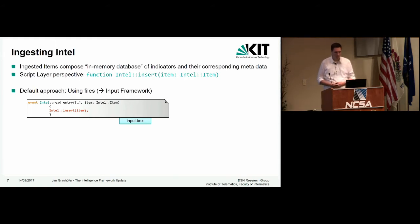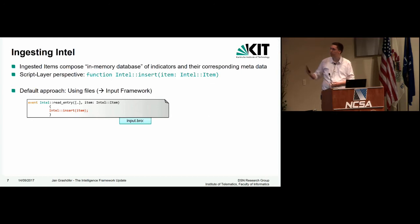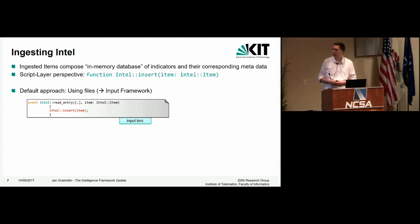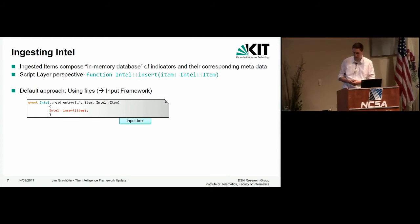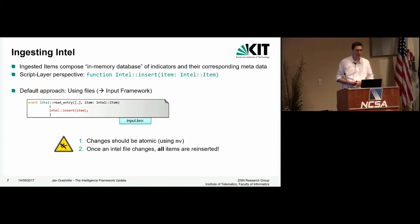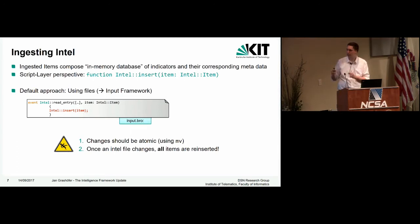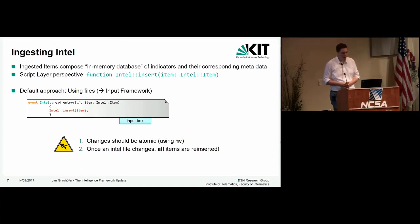How is intelligence usually ingested to build up that in-memory database? The function used inside Bro is intel_insert, which receives the intel item. The default approach is to leverage that using the input framework — when the file is read it just calls that single function to insert the item. There are two pitfalls: every time the file changes, all items are reinserted. So the changes to the file should be atomic — you should use the move command to replace the file.